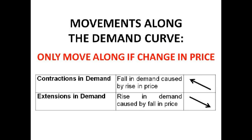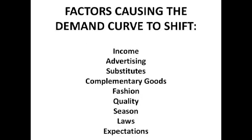Say there is a fall in price — that means more people can afford the good, more people think that good is not too expensive, so demand rises. Which means there is an extension in demand, so we are moving down and along the demand curve. So we have done movement along the demand curve.